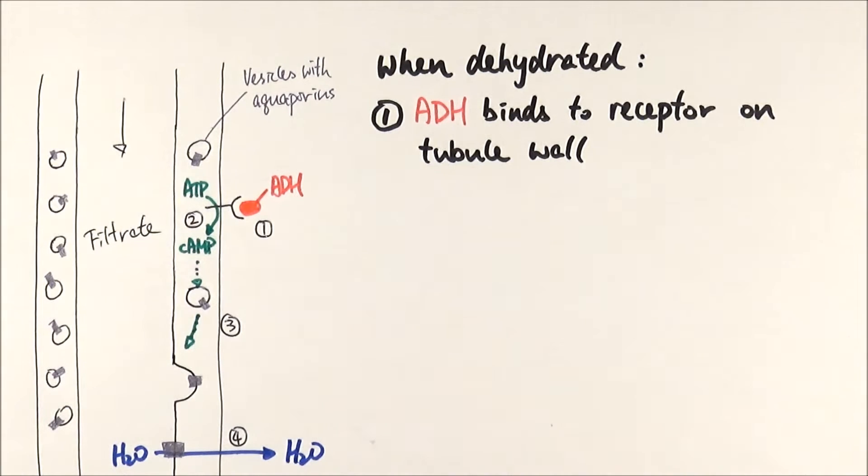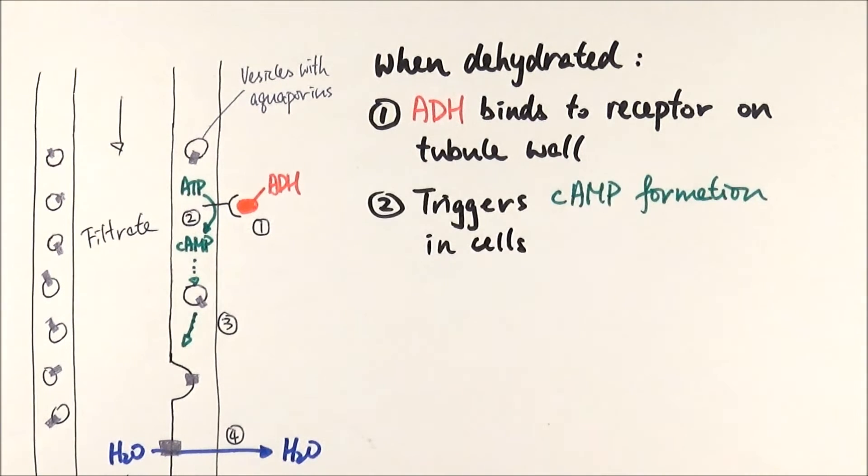So when the body is dehydrated, the first step is that ADH will be released from the pituitary gland and it travels to the kidney to bind to the receptor on the tubule wall. And then because of the ADH, it will trigger cAMP formation in the cells from ATP.